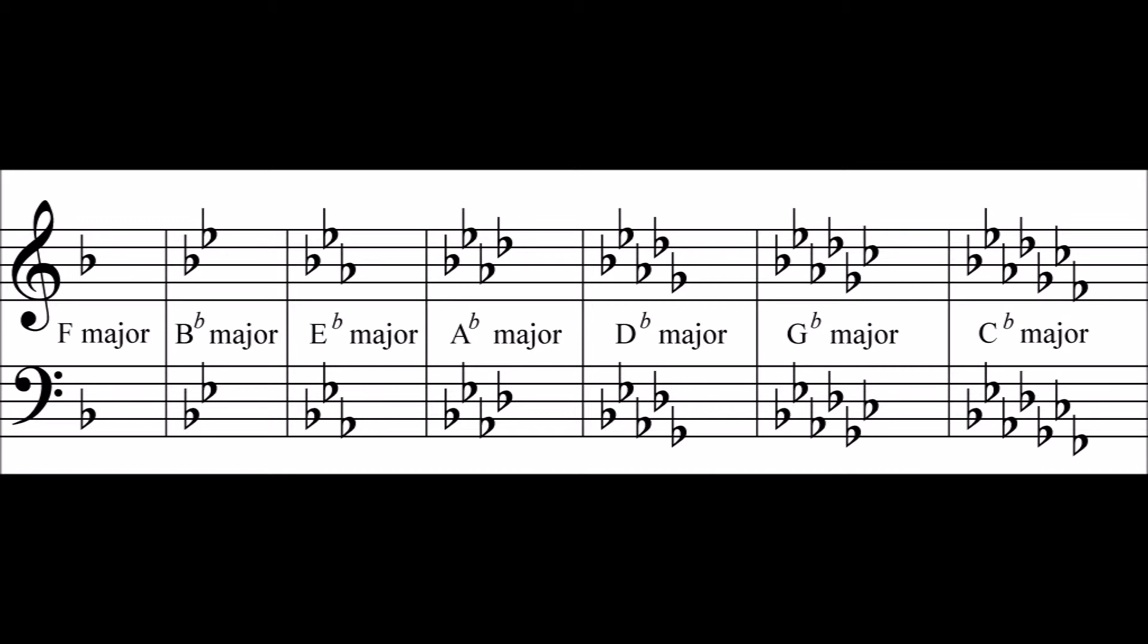Now, let's take off the training wheels. Look at these four examples and see if you can determine the name of the key. Four sharps. Last sharp is D sharp, which I've circled. One half step higher is, that's correct, E. E major, the name of the key.